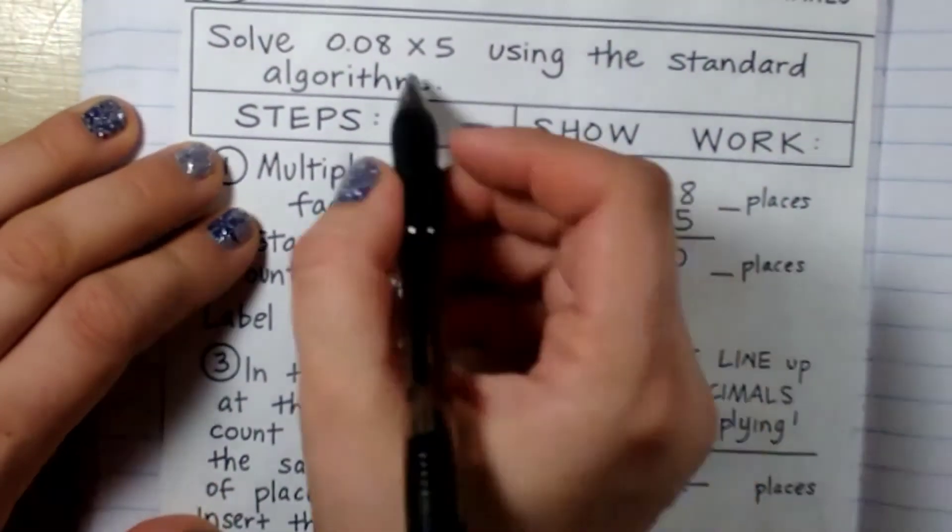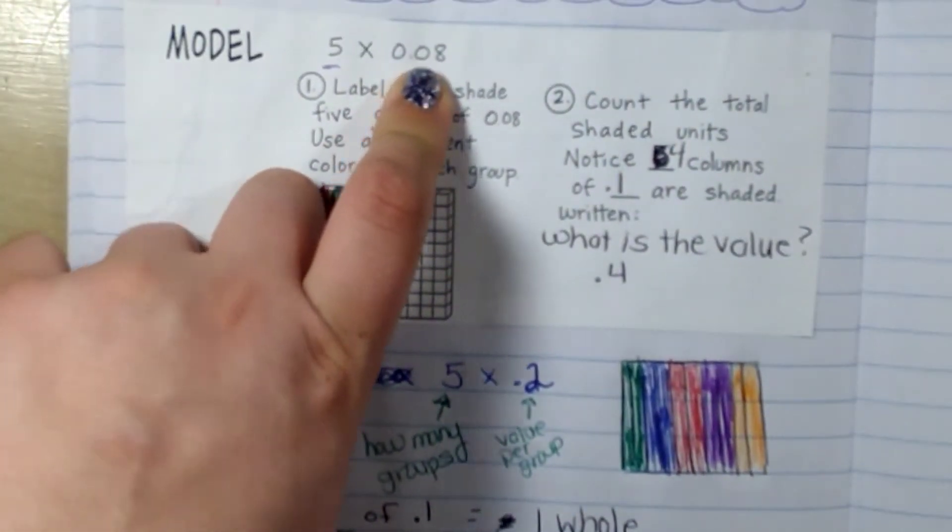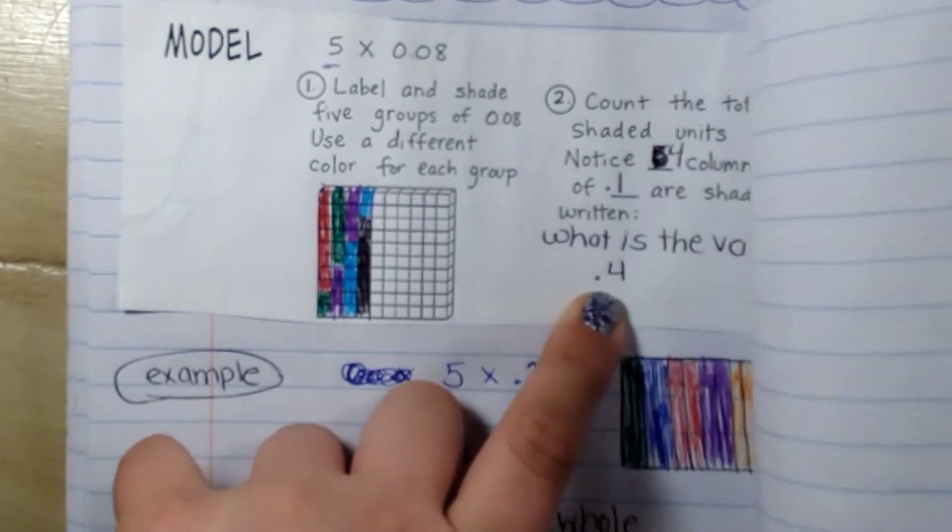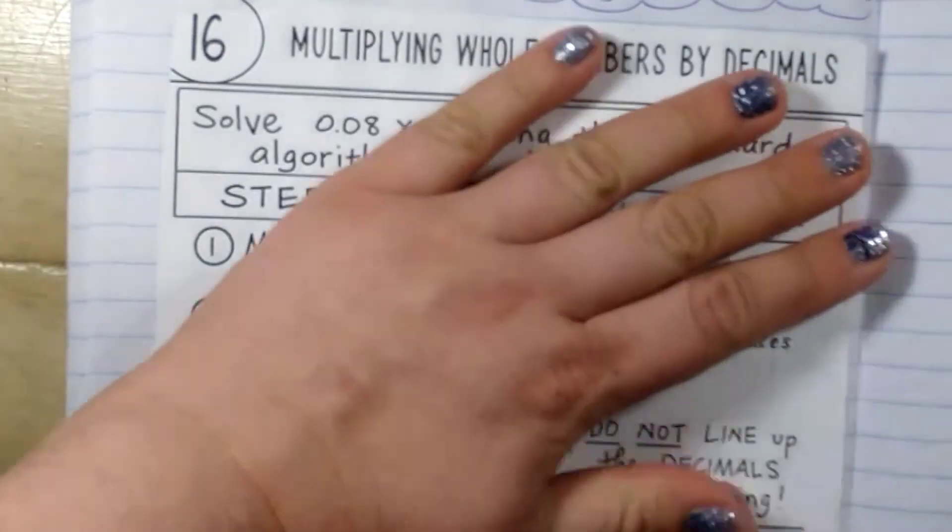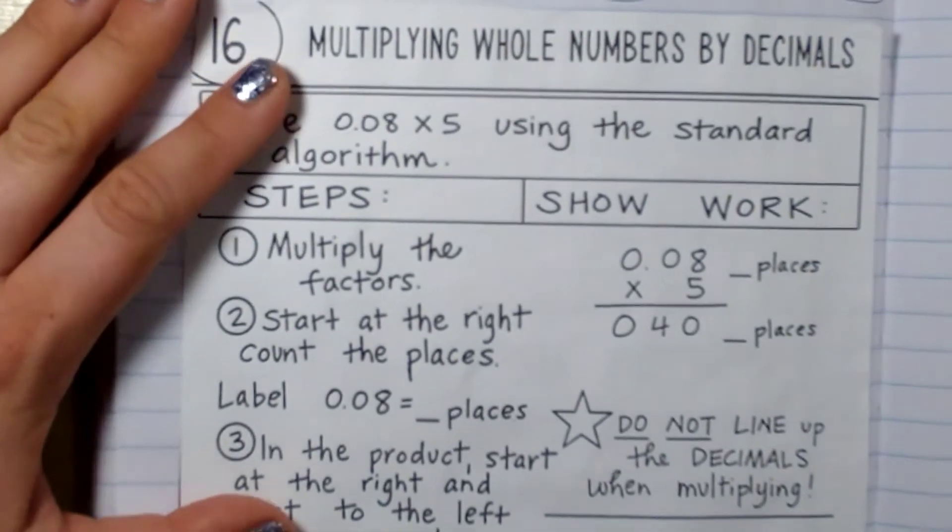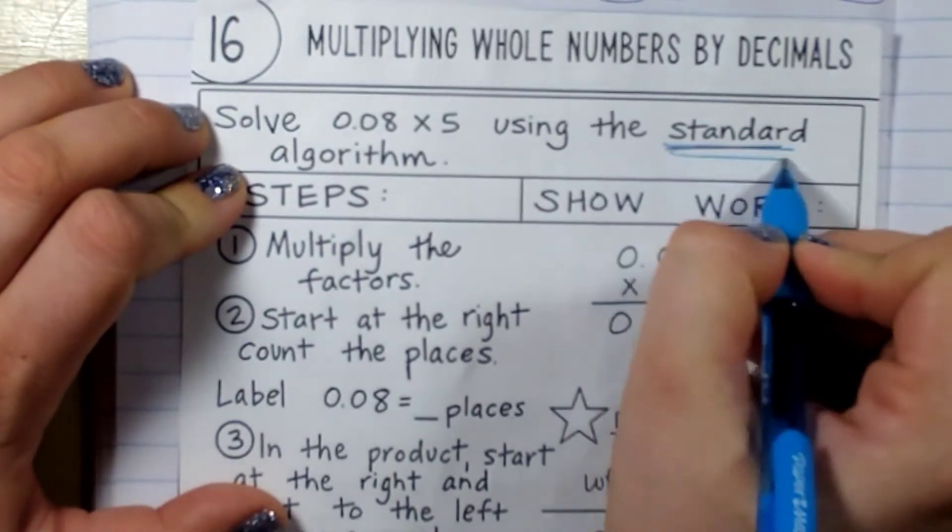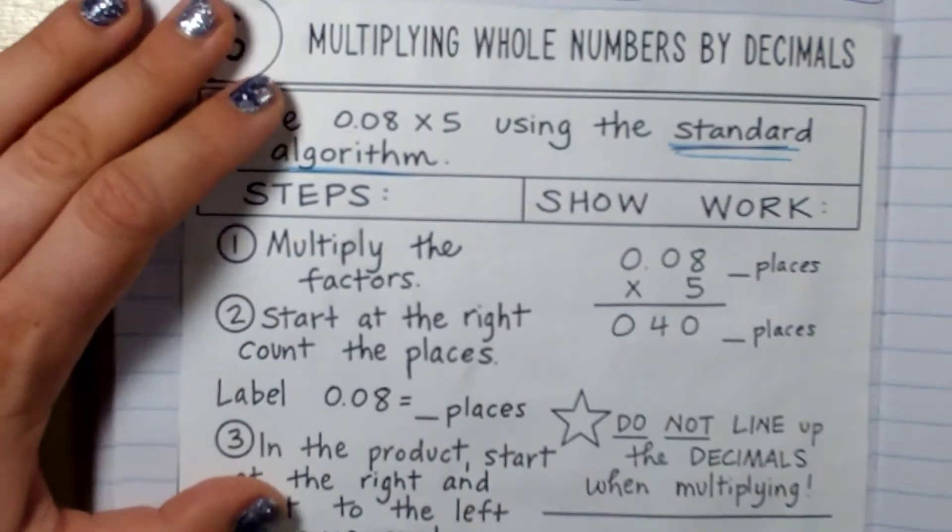So what we're going to do is we're going to solve the same problem here. So we already know our answer is 4 tenths, but I'm going to show you how I can do it another way. Okay? So the first step that I'm going to do in the standard algorithm is the old-fashioned way. What did mom and dad, how did they learn?